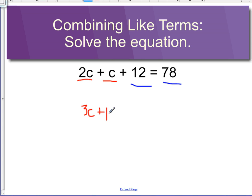We would have 3c plus 12 equals 78. From here, because we've combined these two like terms, we can concentrate on basically just solving the equation like we would normally do. So we would subtract 12 from either side because that would be the inverse.